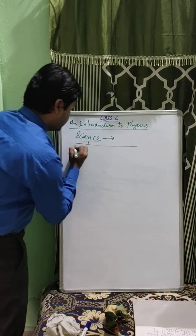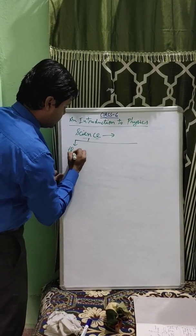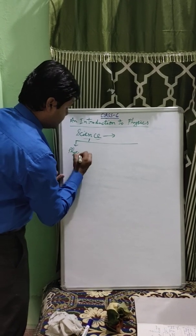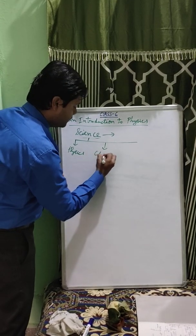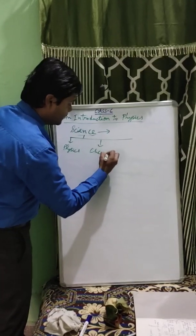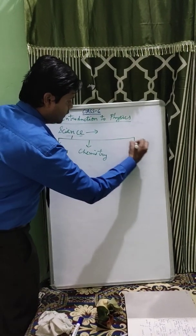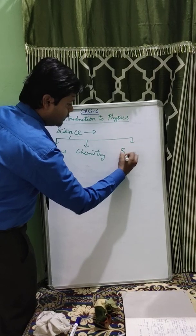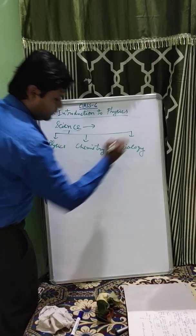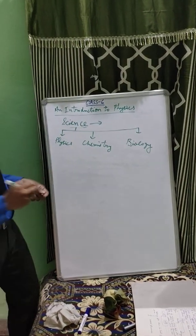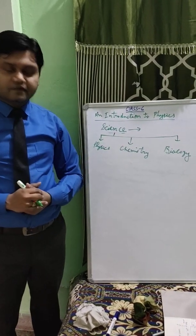Science is classified into three categories. What are they? Physics, Chemistry, and the third one is Biology. Now, let us discuss about Physics.